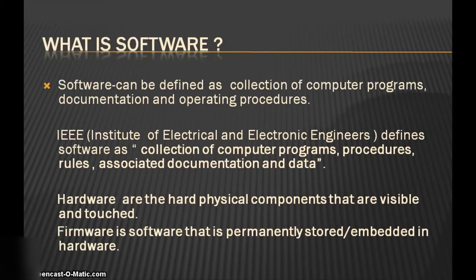What is software? Software can be defined as a collection of computer programs, documentation and operating procedures. IEEE, the Institute of Electrical and Electronic Engineers, defines software as a collection of computer programs, procedures, rules, associated documentation and data.